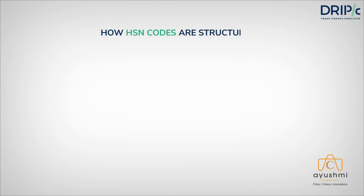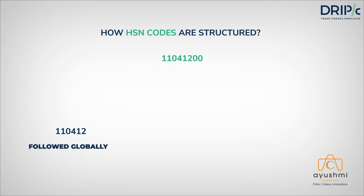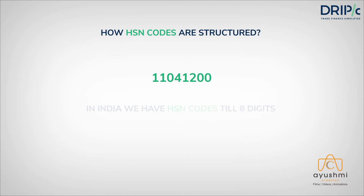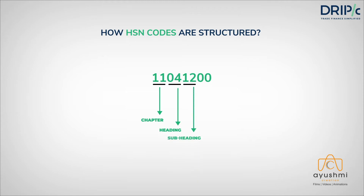The next thing you should know is how HSN codes are structured. Till the first six digits, all the HS codes and HSN codes remain the same globally. But for further classification, countries have added more digits to their respective HS code systems. In India, we have HSN codes till eight digits. The two-digit HSN code is called a chapter, which is further expanded to four digits called headings. Headings further get broken down to six digits called subheadings, and then finally at eight digits are the tariff items.